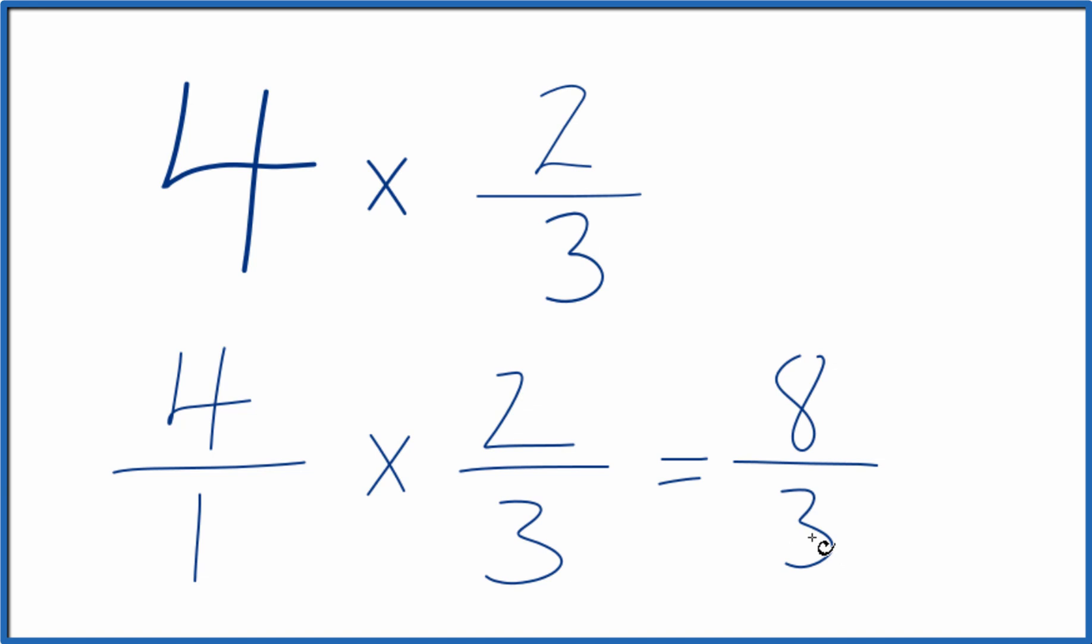That's what we got before, 8 thirds. So in answer to our question, 4 times 2 thirds equals 8 thirds.